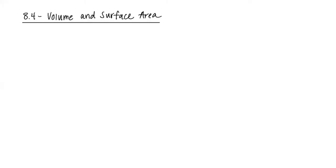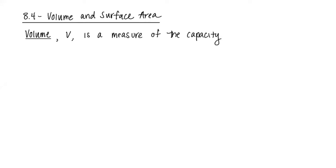When we talk about an object in three dimensions, the first thing you're going to think of is volume. Volume, denoted V, is a measure of the capacity of a 3D figure. Basically, if I have an object and I could pour in water, how much water would that take up? Because this is measuring that 3D capacity, your units are going to be cubed.